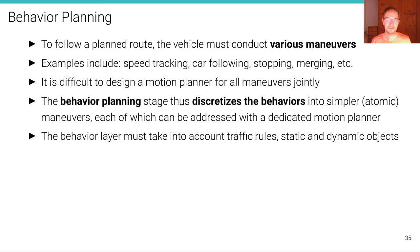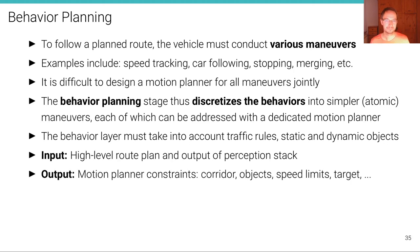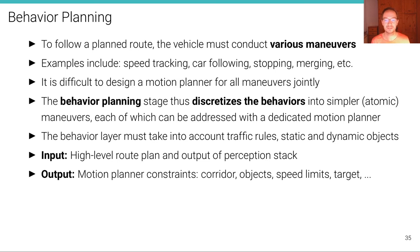The behavior layer must take into account traffic rules, static and dynamic objects. The input to the behavior planner is the high-level route plan — for example, planned using the A* algorithm — and of course the perception stack. The output of the behavior planning stage are the motion planner constraints such as the driving corridor, objects in the vicinity of the vehicle, speed limits, the target location, etc.